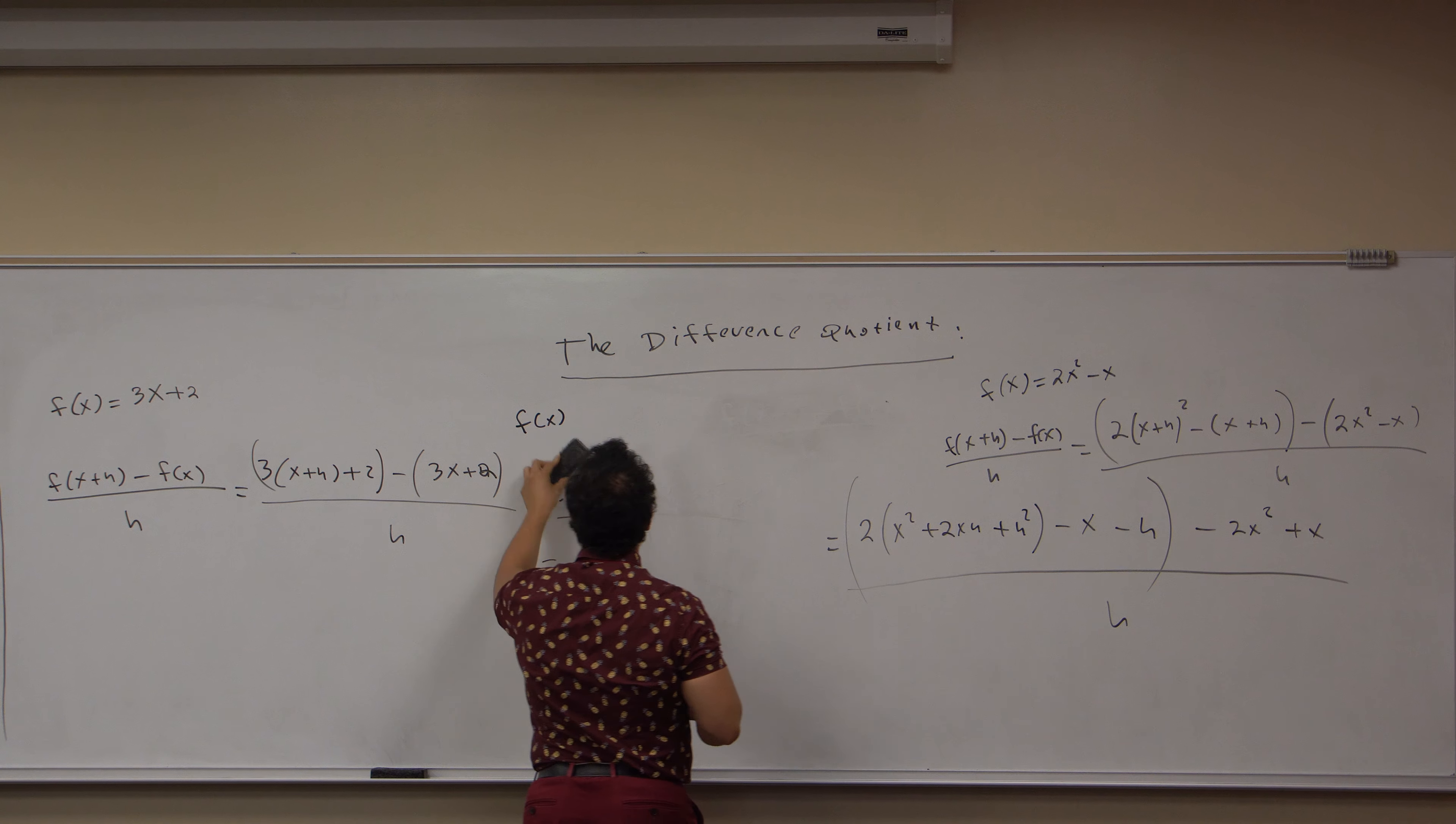I'm using brackets here. I'm using parentheses here. But it really doesn't matter. Brackets and parentheses in this case are the same. Brackets and parentheses are not always the same in mathematics. In this case they are. Now we cancel out these h's here. So we get the difference quotient as 4x plus 2h minus 1. This is the difference quotient of our function f of x is equal to 2x squared minus x.